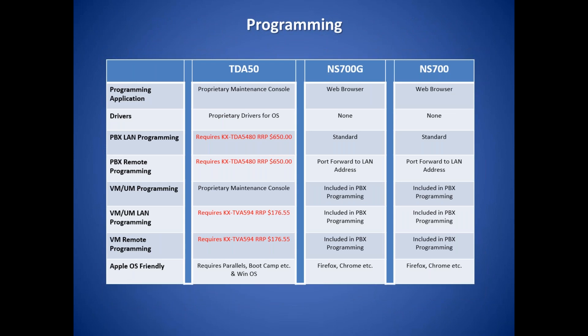Programming is greatly improved in the NS700 and the NS700G. The TDA50 requires separate proprietary maintenance consoles and drivers for both the PBX and the voicemail. LAN and remote programming for the TDA50 and the TVA voicemail requires additional cards in each machine. The NS700 and the NS700G are programmed via web browser, making them friendly to non-Windows operating systems. PBX and unified messaging programming is done through the same interface, and programming the NS700 and the NS700G is very similar to the TDA50.